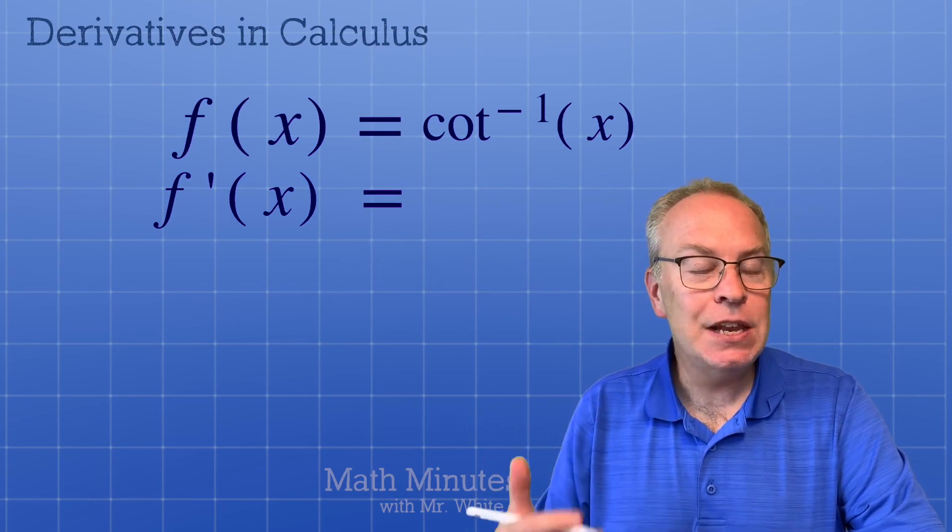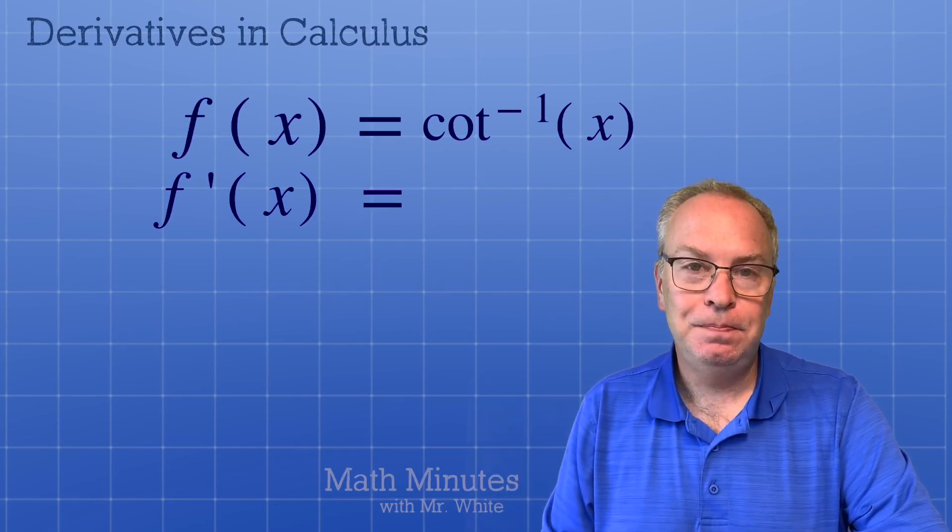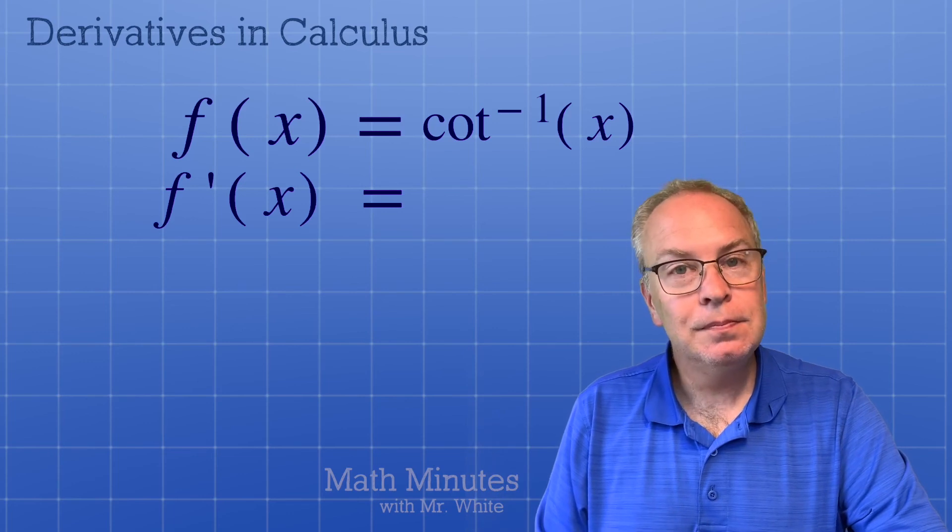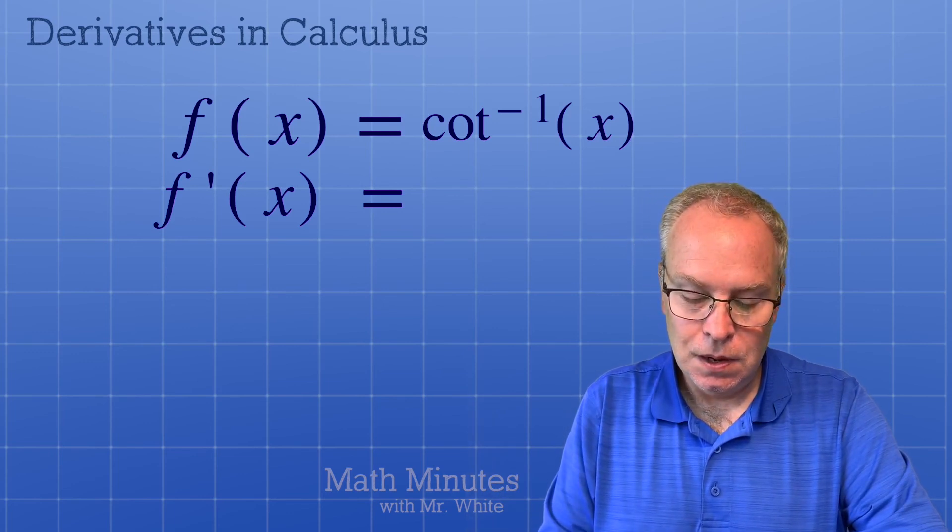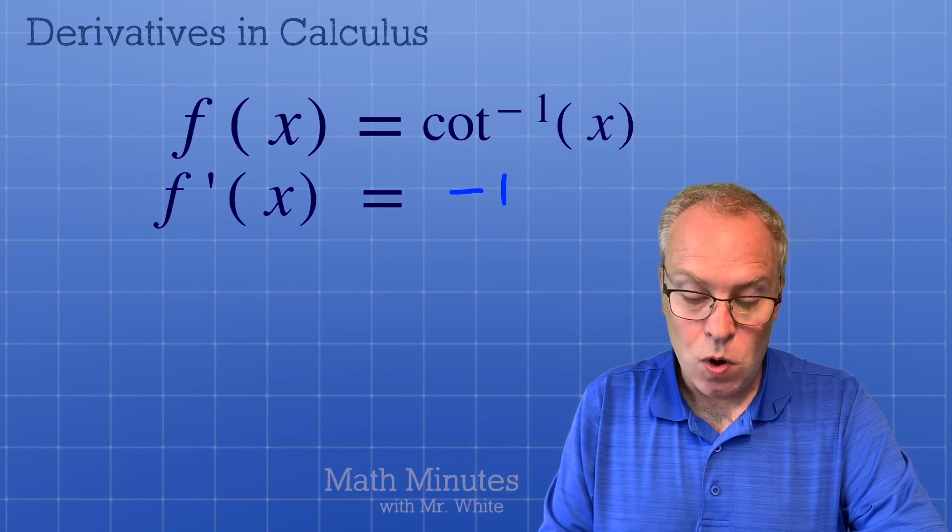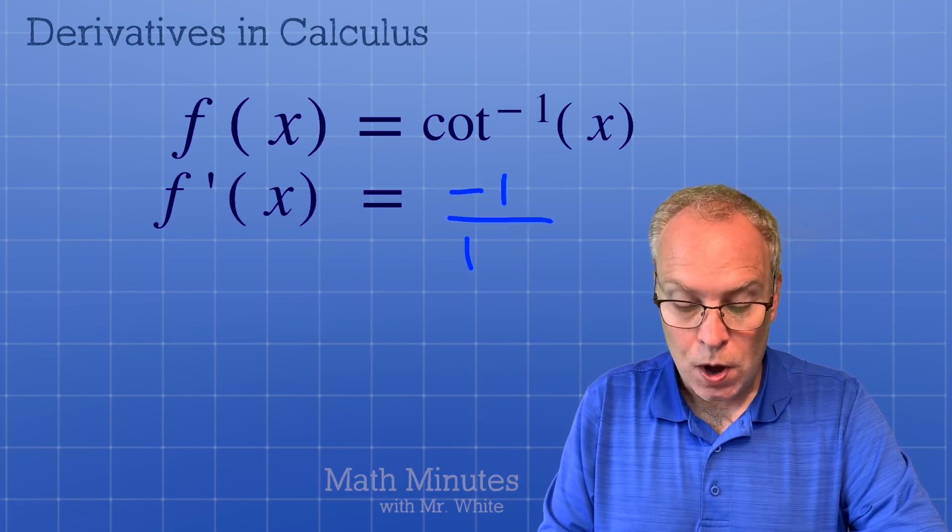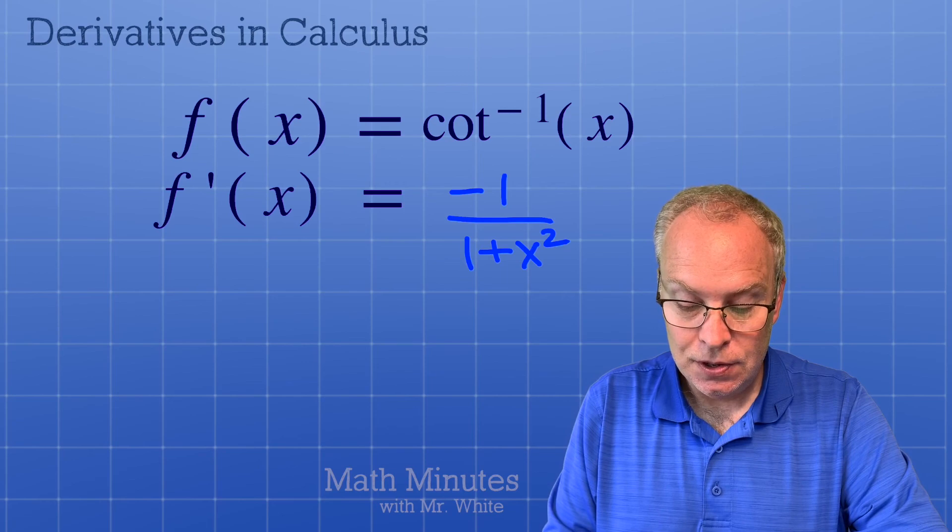What's the derivative of inverse cotangent? Negative 1 over 1 plus x squared.